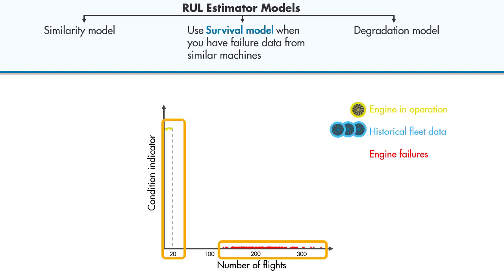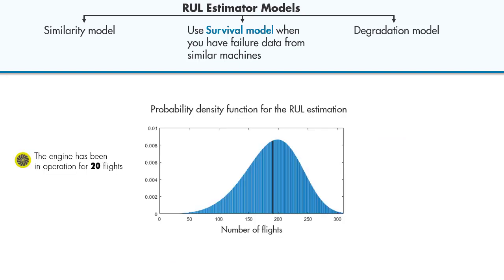We also know how many flights the engine has been in operation. The survival model uses a probability distribution of this data to estimate the remaining useful life.